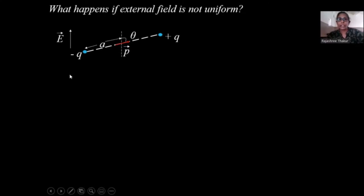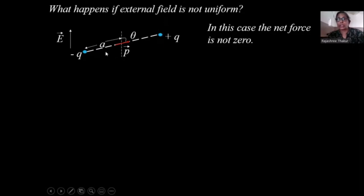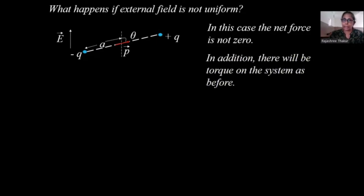Now let us see what happens if we keep the dipole in a non-uniform external electric field. In a non-uniform field, the force acting on the dipole will not be zero — the net force is non-zero. At the same time, as before, there will also be a torque acting on the system. Let us take the simpler cases where the dipole is either parallel or anti-parallel to the electric field.